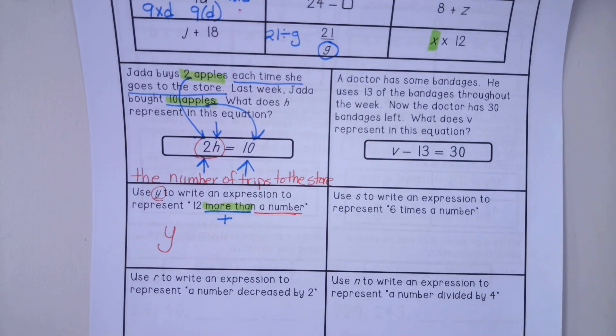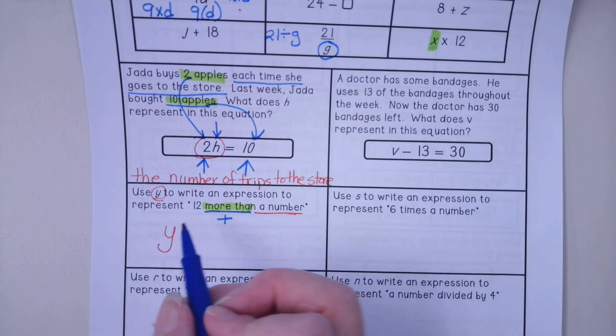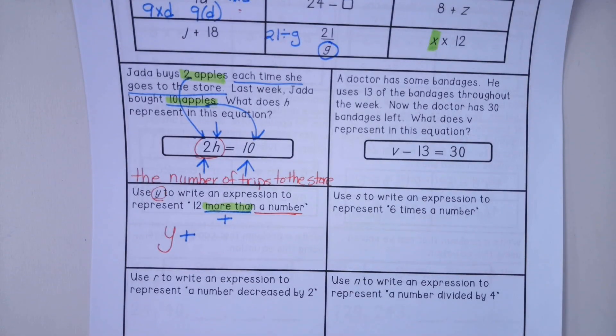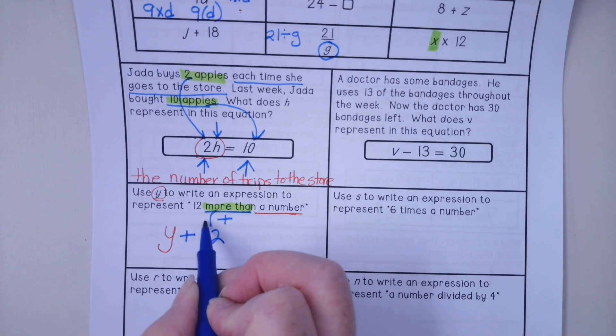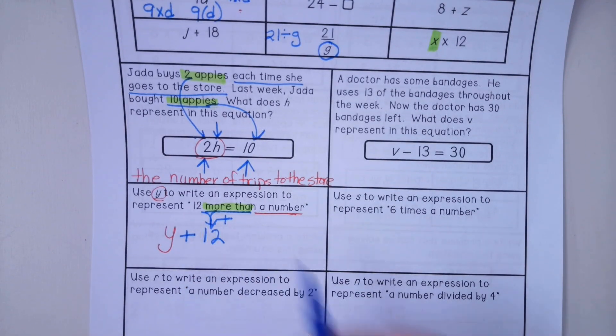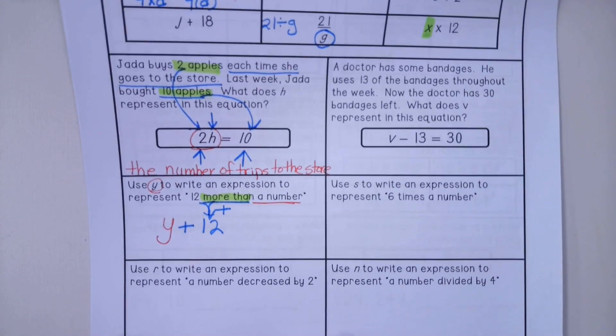Because if it was multiplication, it would say times. Three times or five times something. So in this case, we have addition. And now we have 12. 12 more than a number.